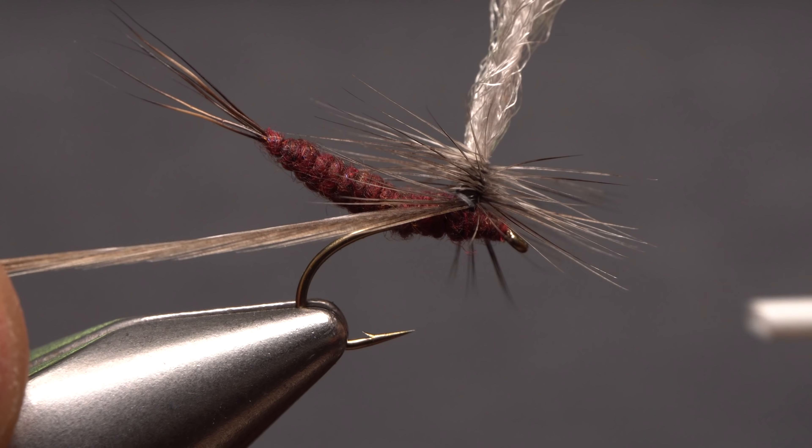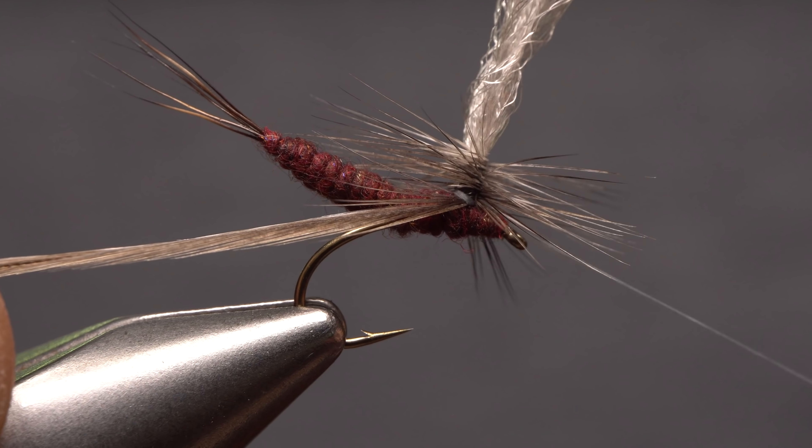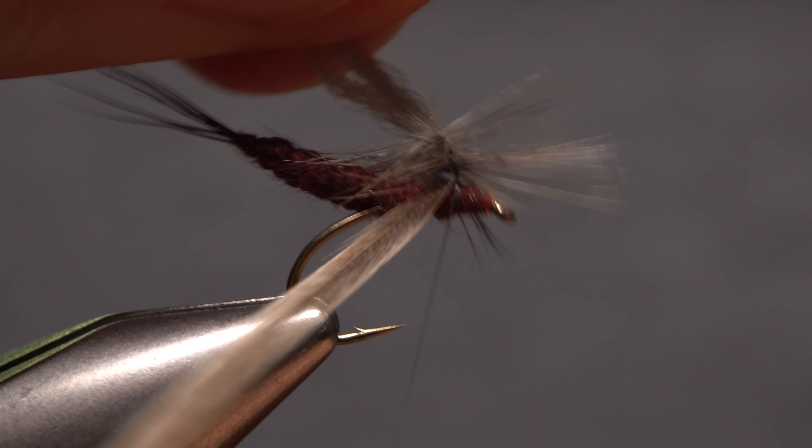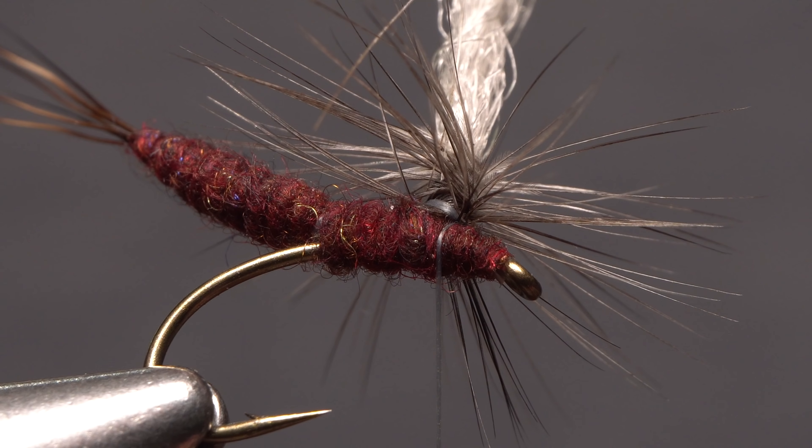Carefully take wraps of tying thread to secure the feather to the base of the post. The idea is to trap as few hackle fibers as you can in the process. Use the very tips of your tying scissors to snip the excess hackle feather off close.